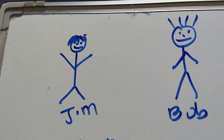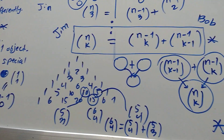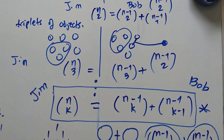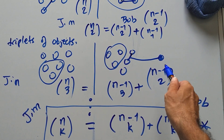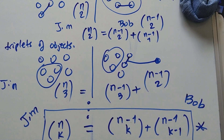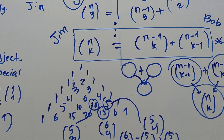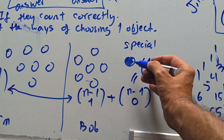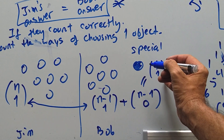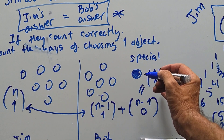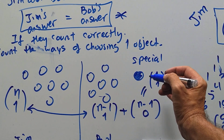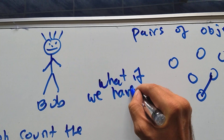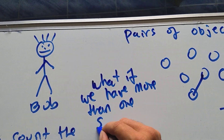Good old Jim and good old Bob — we're going to come back to them in the next video. The natural question that should come to mind is: why use just one special object? What if we use more than one? This is where the creative aspect of combinatorial arguments comes in — it's like diving into the river and seeing where it takes you.